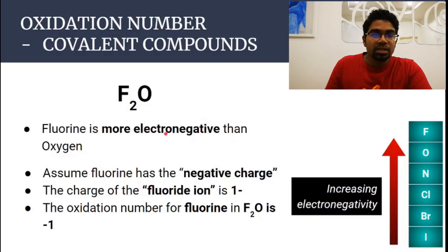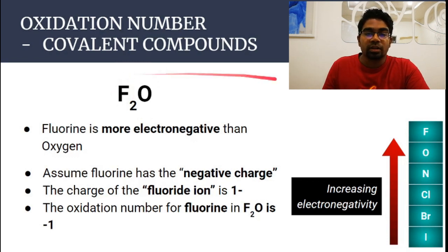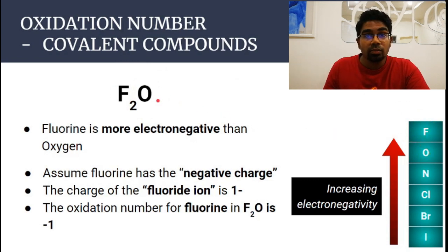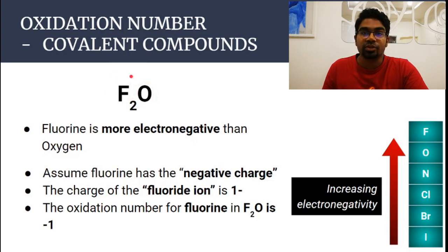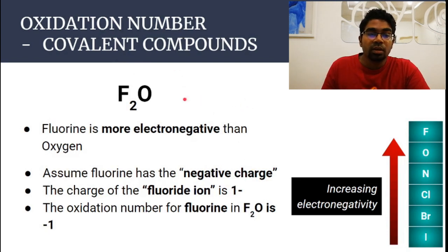Let's try another one. This is a special case: fluorine with oxygen. Fluorine is the only element more electronegative than oxygen, so instead of oxygen gaining the electrons, fluorine will gain the electrons and become the fluoride ion, which has a charge of one minus. This means the oxidation number of fluorine in difluorine oxide is minus one.